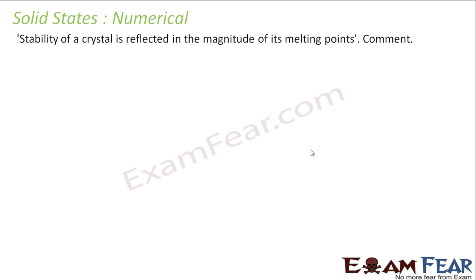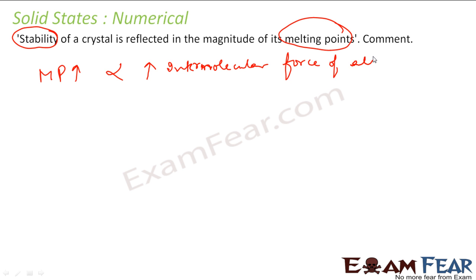Stability of a crystal is reflected in the magnitude of its melting point. Comment. See, the question says that stability is something which we can derive from melting point. Obviously, melting point is a good indication of the intermolecular force of attraction. So you have a high melting point, this implies high intermolecular force of attraction. So high intermolecular force of attraction means high melting point, and that easily implies greater stability.